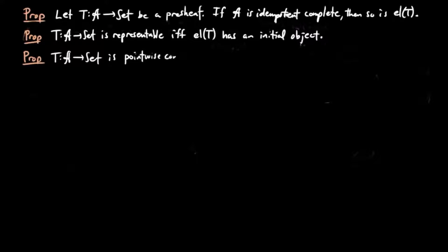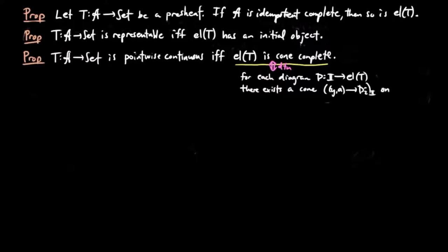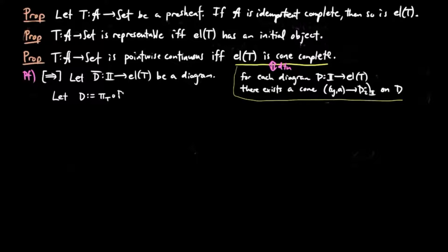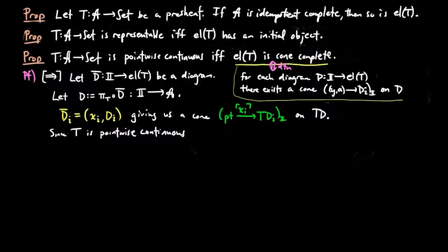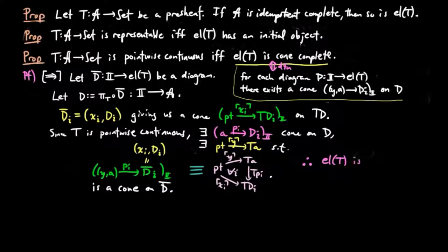Next, we show that a pre-sheaf T is pointwise continuous if and only if its category of elements is cone-complete, meaning that for each diagram D on the category of elements of T, there exists a cone on D. To prove the forward direction, given a diagram D-bar on the category of elements of T, we set D to be the composition pi_T composed with D-bar, where pi_T is the projection functor. Then by definition, D-bar(i) equals x_i(d_i) for some element x_i in T(d_i) for each i, giving us a cone of elements x_i on T(D). Since T is pointwise continuous, there exists a cone pi on D and an element y of T(A) such that T(pi)(y) equals x_i for each i. But this is equivalent to giving a cone pi with vertex yA on D-bar. Therefore, the category of elements of T is cone-complete.